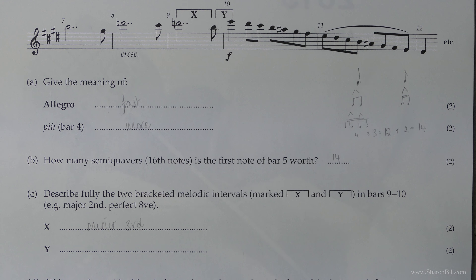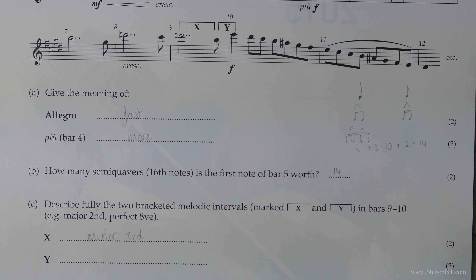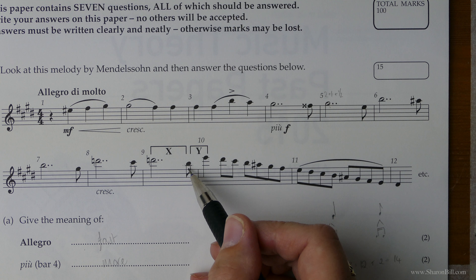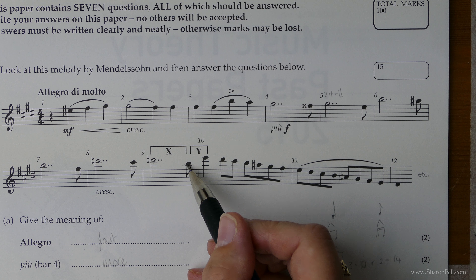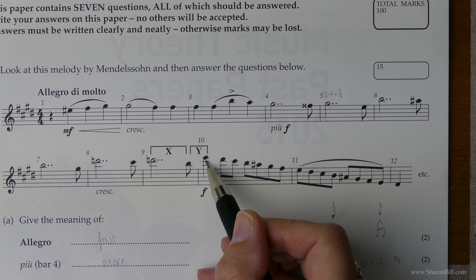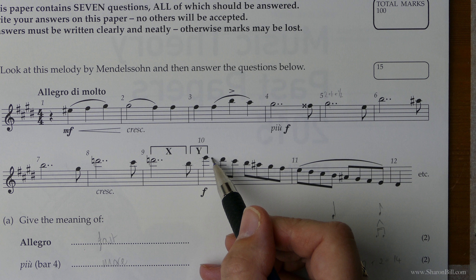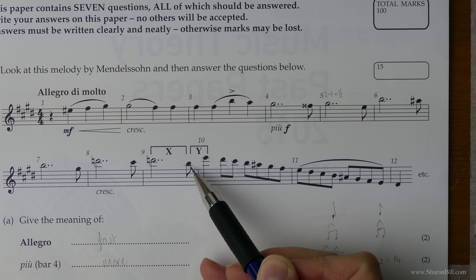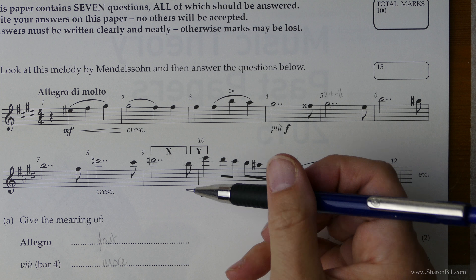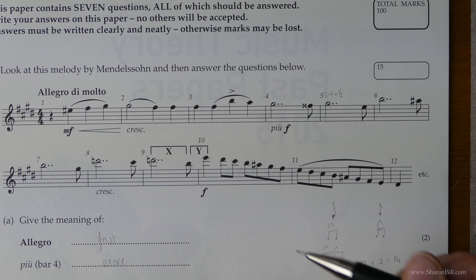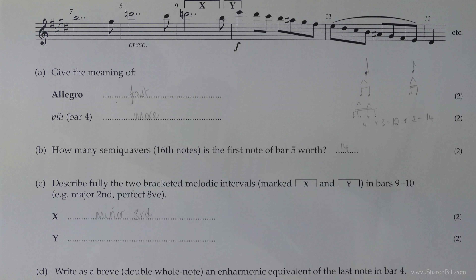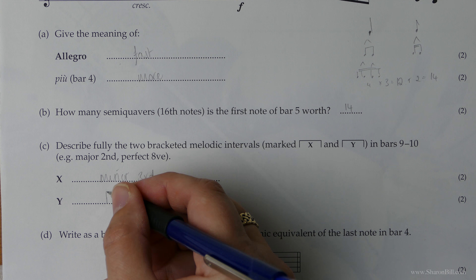Now let's look at interval Y. Here we're going from B up to E. Counting up: one — the space — two, three, four. There are no alterations from the key signature, and B to E is perfect. So that's a perfect fourth.